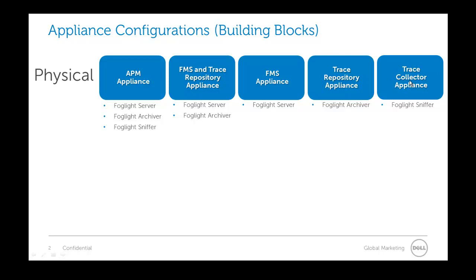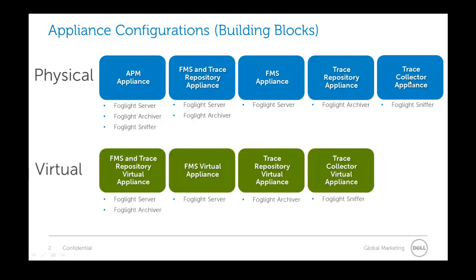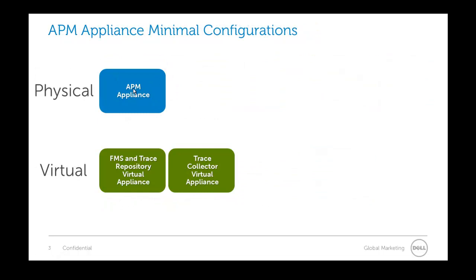Alternatively, in version 5.9, we also have a virtual version of this. Basically, you can have the Foglight server and the Foglight archiver on one box. The only thing we do not have in the virtual appliance today is the all-in-one solution — the APM appliance. For the virtual setup, you need two different virtual appliances: the FMS and trace repository virtual appliance, and the trace collector virtual appliance.